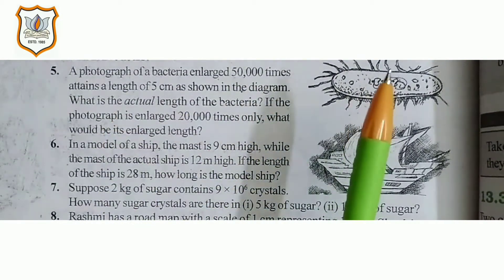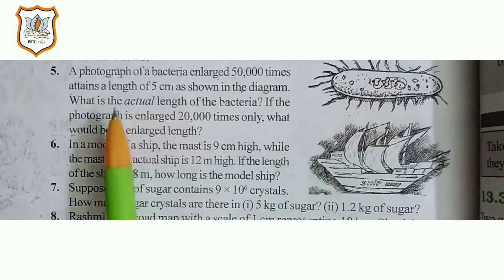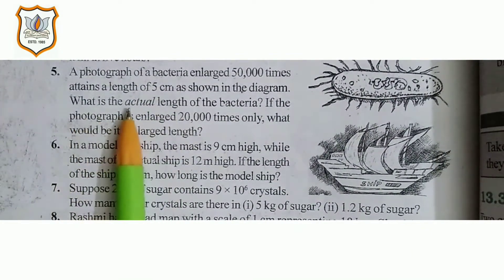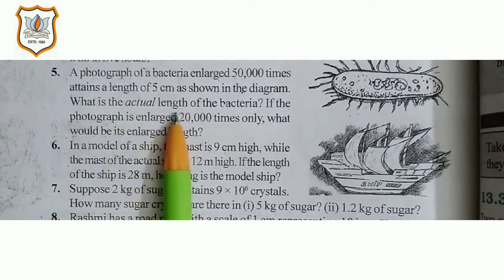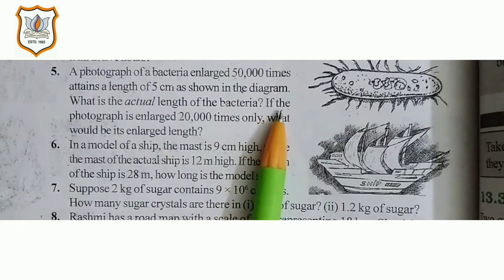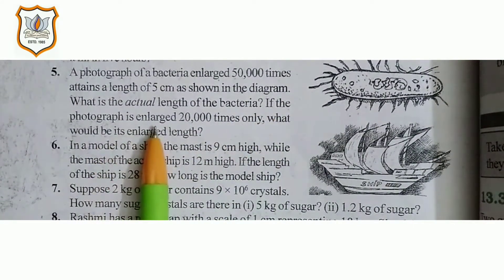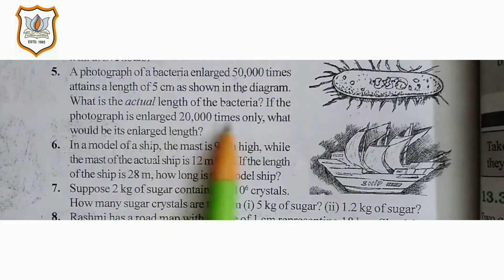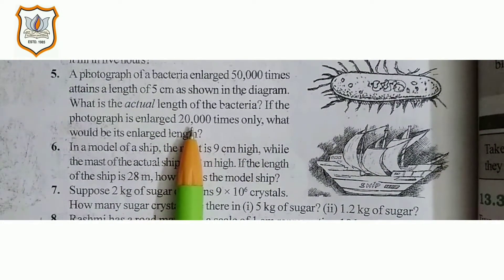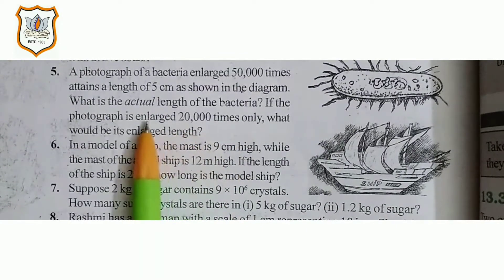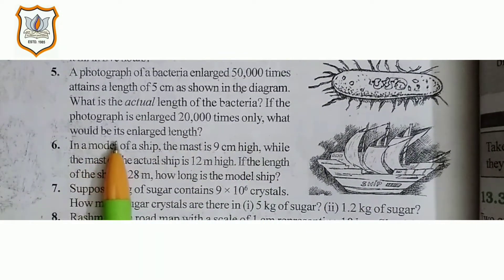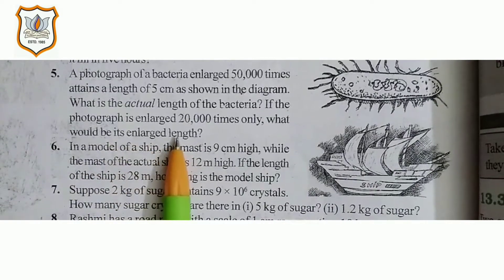Then the length of this picture is 5 centimeters. First we will find what is the actual length of the bacteria. Then we will find, if the photograph is enlarged 20,000 times only — if we zoom this picture 20,000 times — what would be its enlarged length?